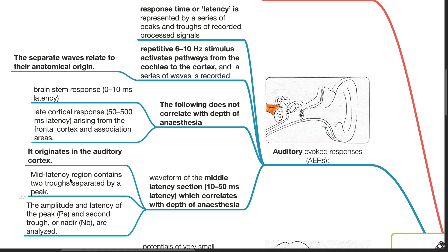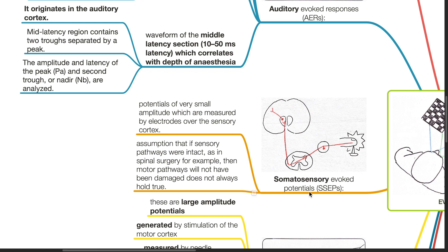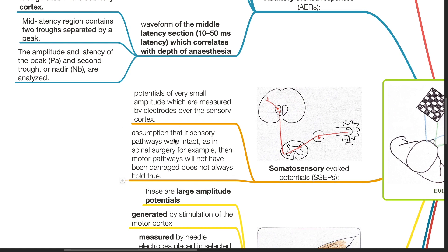The mid-latency region contains two troughs separated by a peak. The amplitude and latency of the peak PA and the second trough or nadir NB are analysed. Somatosensory evoked potentials are potentials of very small amplitude measured by electrodes over the sensory cortex. The assumption that if sensory pathways are intact then motor pathways will not have been damaged does not always hold true.